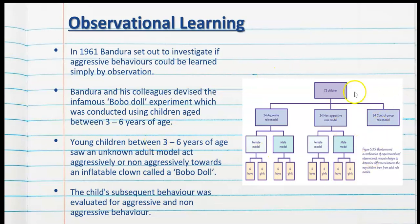As we can see from this figure, there was a control group where the role model did not interact with the Bobo Doll at all and instead played with other toys available in the room. There was a second group where the role model was non-aggressive towards the Bobo Doll, playing very peacefully and gently with it. The experimental group showed the aggressive role model kicking, punching, swearing and hitting the Bobo Doll in a very aggressive manner.